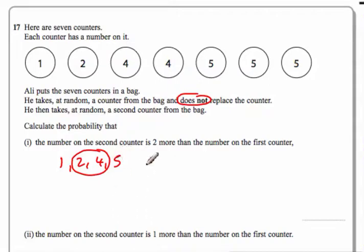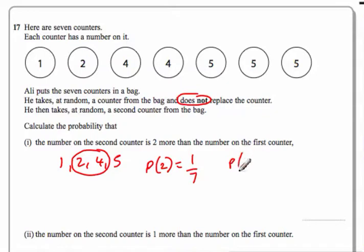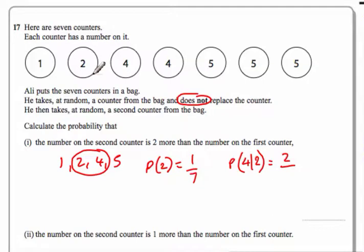The probability of getting a two the first time will be one out of seven because we've only got one two out of seven counters. The probability of getting a four, given that we got a two the first time, is going to be — well, we've got two fours — so it's two out of six, because there are only six in the bag now since he kept the first counter. So that's two out of six, which is the same as one third.